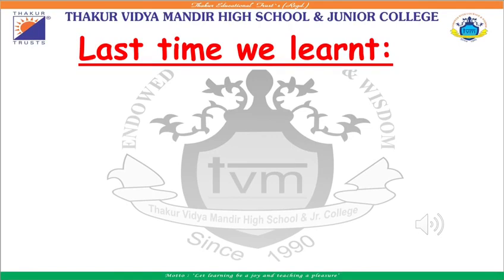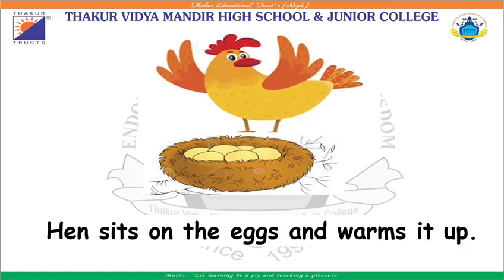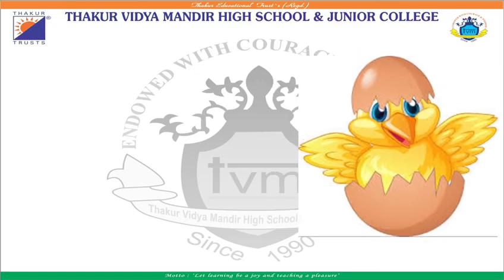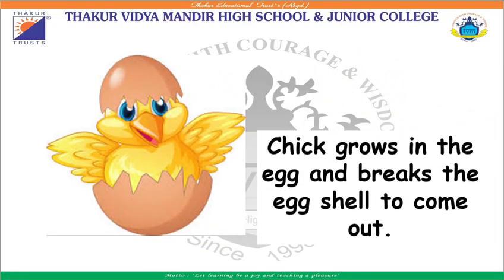Then, we saw the life cycle of a hen. A hen first lays eggs. Then the hen sits on the eggs and warms them up. After a cycle of 21 days, a fully grown chicken breaks the egg shell and comes out.